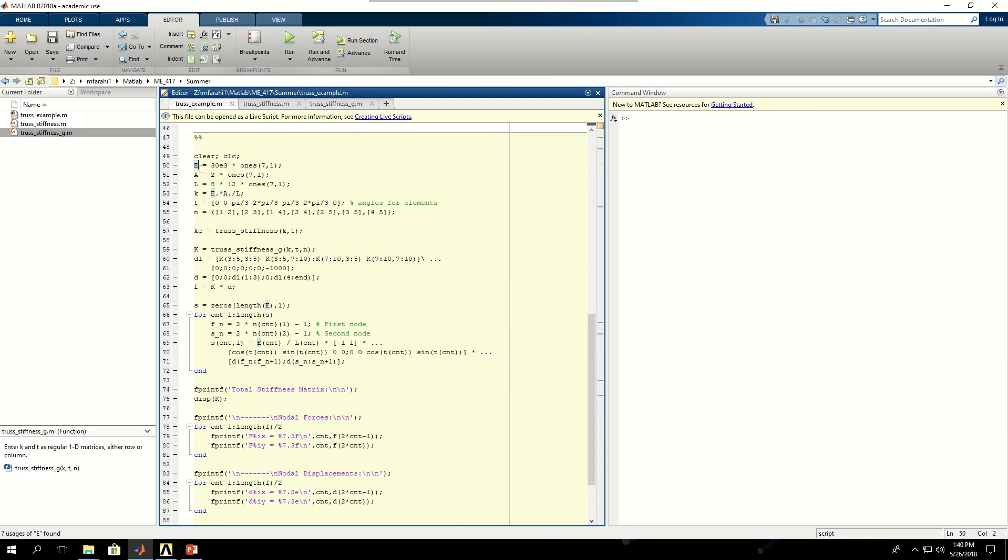Then I use these three values to create EA over L for all the elements. And then I define the angles for the elements. If you remember, the first one was at zero, the second one was at zero. The third one was at 60 degrees, which is pi over three. And then I had the fourth element at 120 degrees, which is two pi over three. And I just give those numbers here, the seven angles for the seven elements.